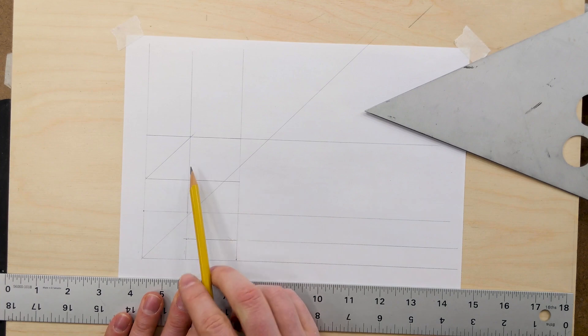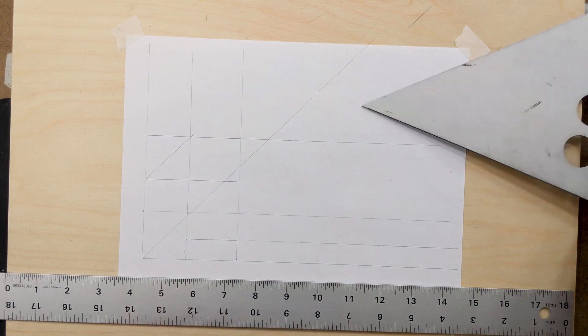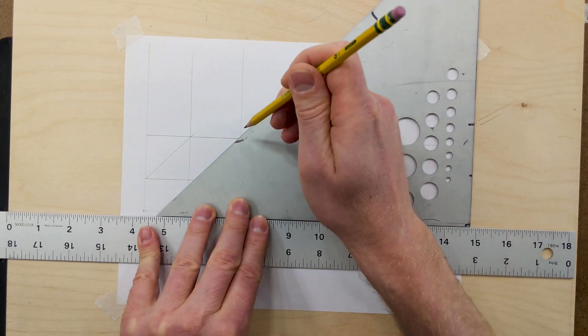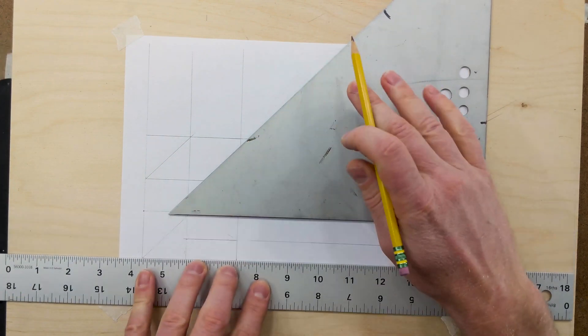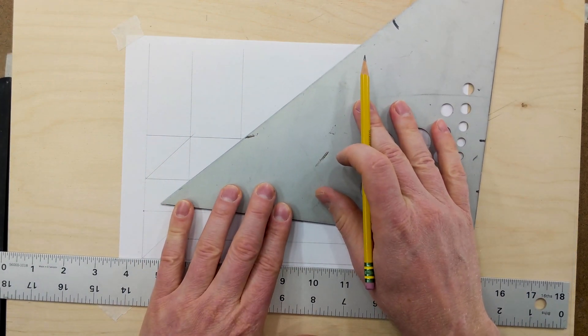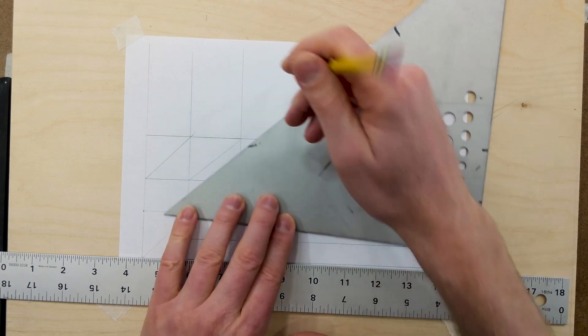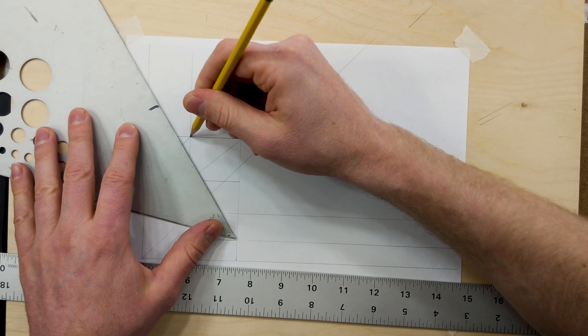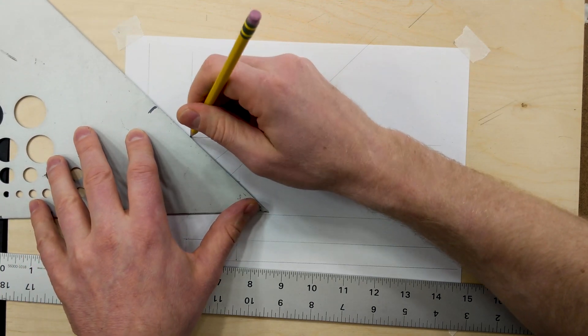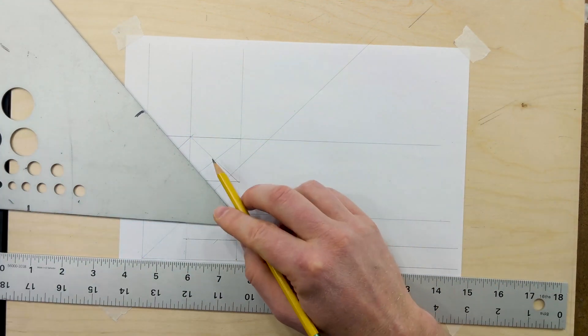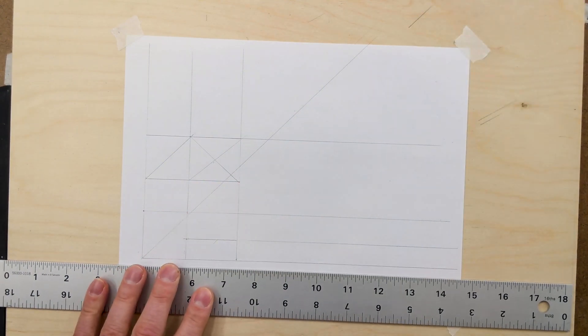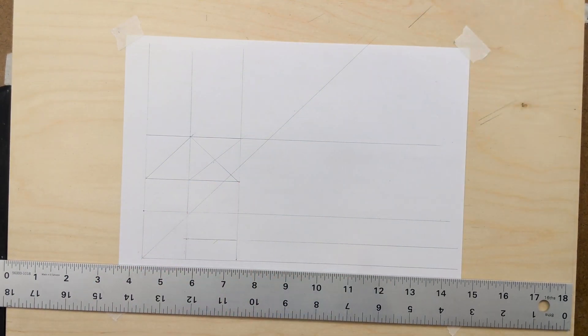So now we have our top section there, except now we also need to have our circle. So let's find the center. Remember, this is not a square, so it won't have that perfect center there. So there's our center. And we'll use our compass to draw a circle there. But let's go ahead and take care of our other view.